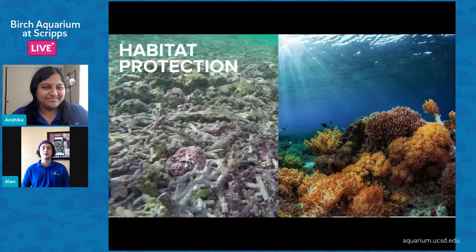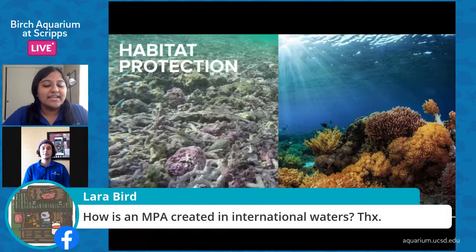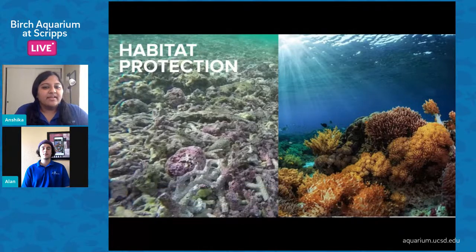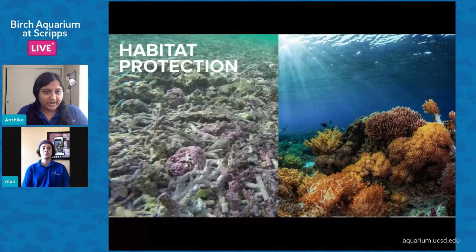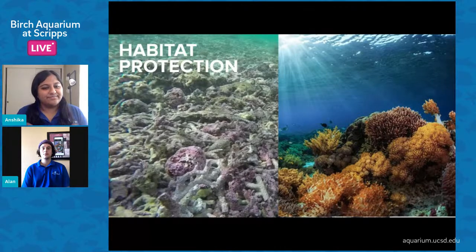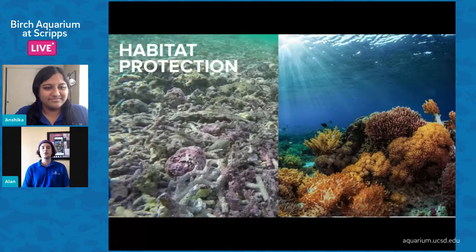We have a question from Lara: how is an MPA created in international waters? Great question — to establish an MPA in international waters, the countries that use that ocean area have to work together and agree on the protection objective. They all sit down and figure out what they want to protect, why they want to protect it, and how they're going to do it, then work together to reach that goal.